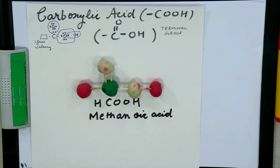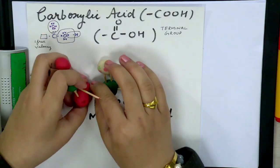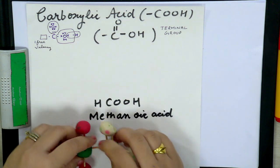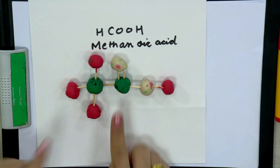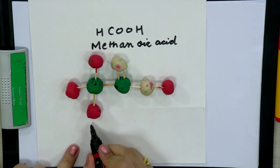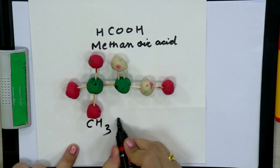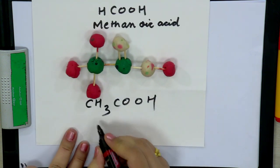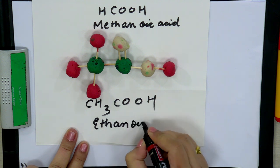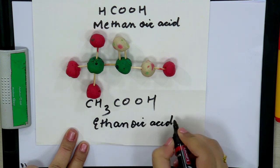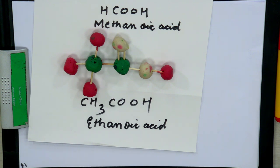For the second member, simply add one CH₂ unit. The structure now has two carbons, and the formula is CH₃COOH. The name is ethanoic acid — all single bonds between carbons, so 'an', plus 'oic acid'. The common name is acetic acid, found in the vinegar we use at home. You can make a table and create your own structures with clay and the concepts will become clear very quickly.